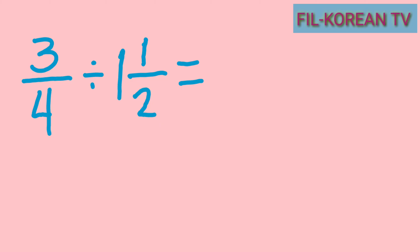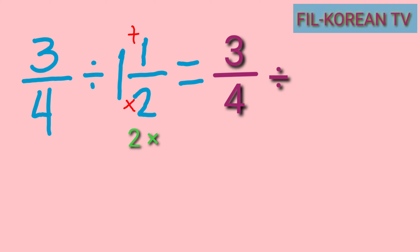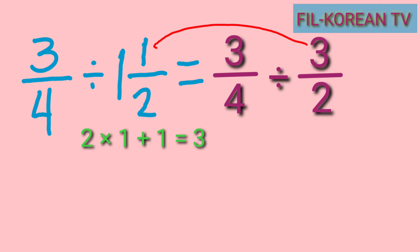This time we will divide a fraction by a mixed number: three fourths divided by one and one half. The first step is to change the mixed number into an improper fraction. We will multiply the denominator by the whole number and add the numerator. Two times 1 equals 2, plus 1 equals 3. So 3 is the new numerator and we copy the denominator 2. It is now an improper fraction.